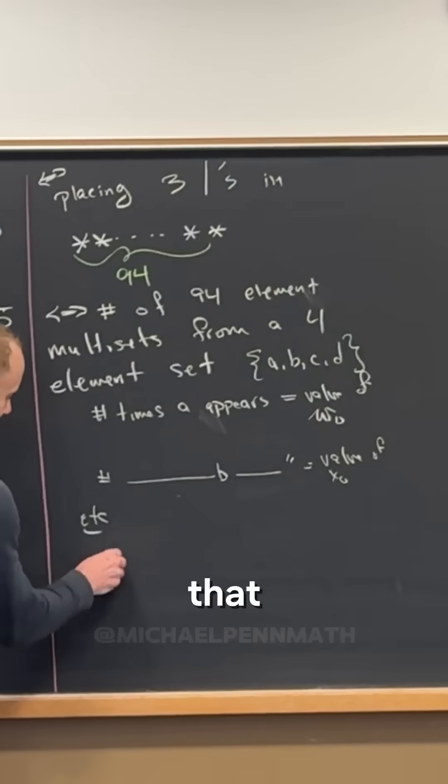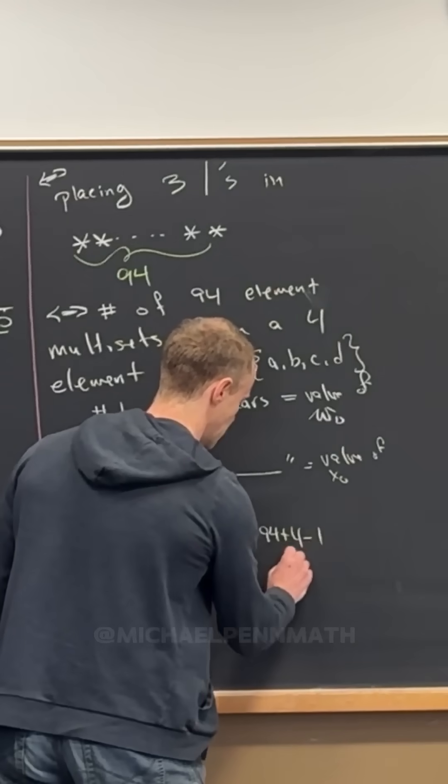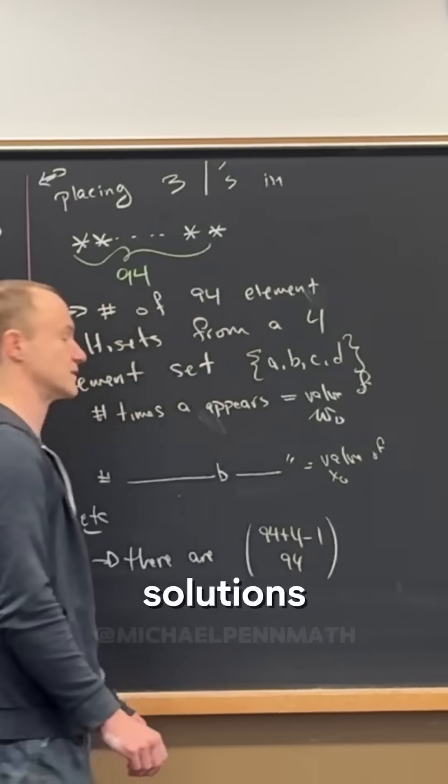So that means that there are 94 plus 4 minus 1, 4 minus 1, choose 94. Choose 94 solutions, right?